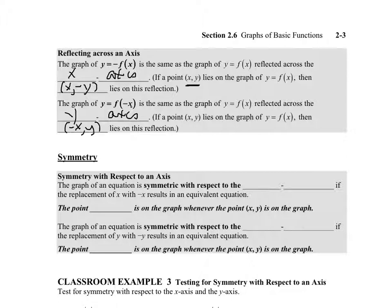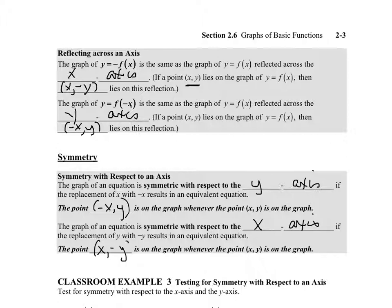The graph of an equation is symmetric with respect to the y-axis if the replacement of x with negative x results in an equivalent equation — meaning the point (−x, y) is on the graph whenever (x, y) is. And if replacing y with negative y gives an equivalent equation, then we have symmetry with respect to the x-axis, meaning the point (x, −y) is on the graph whenever (x, y) is.